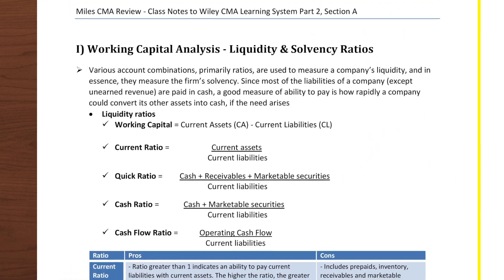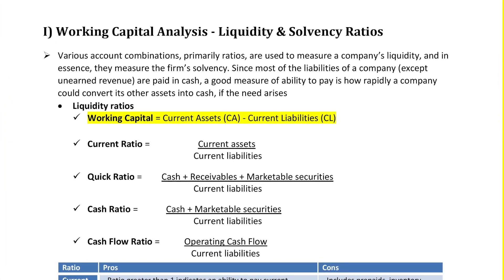Summary highlights: Working capital equals current assets minus current liabilities. Current ratio equals current assets divided by current liabilities. Quick ratio has the same denominator — current liabilities — but the numerator includes only cash, receivables, and marketable securities, which equals current assets minus inventory minus prepaids. The quick ratio looks only at current assets very readily convertible to cash.